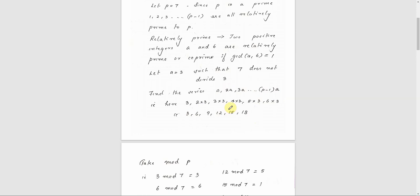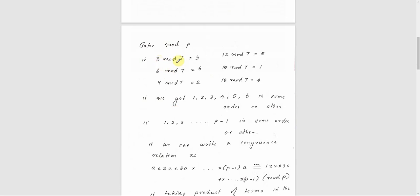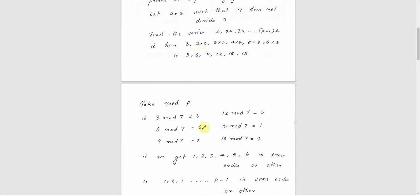Then we are taking mod P. We take mod 7. So: 3 mod 7 equals 3, 6 mod 7 equals 6, 9 mod 7 equals 2, 12 mod 7 equals 5, 15 mod 7 equals 1, 18 mod 7 equals 4.